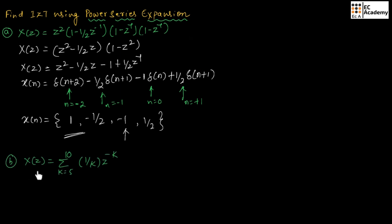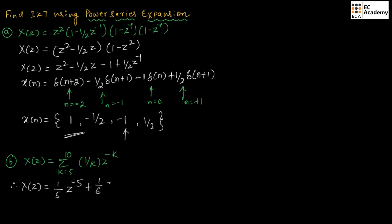The second problem is: X of Z equals the summation for K from 5 to 10 of (1/K) Z to the power of minus K. To solve this problem, we substitute different values of K from 5 to 10. For K equal to 5, we get (1/5) Z to the power of minus 5. For K equal to 6, we get (1/6) Z to the power of minus 6. For K equal to 7, we get (1/7) Z to the power of minus 7.